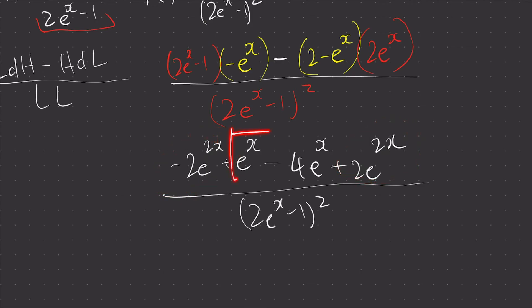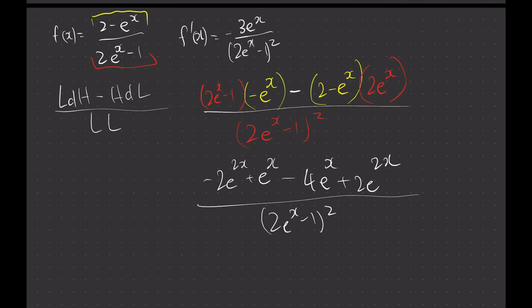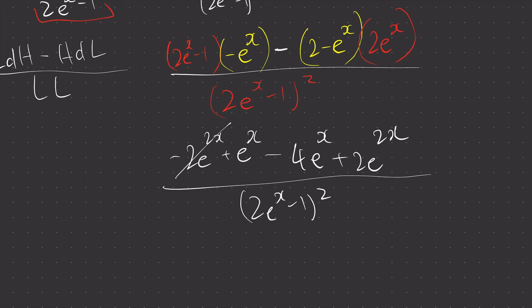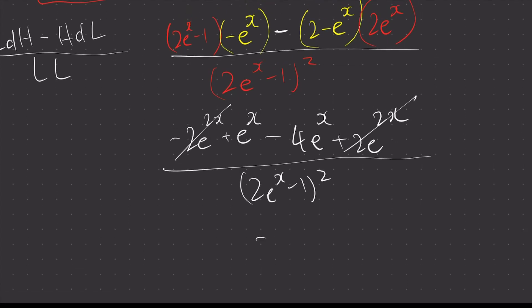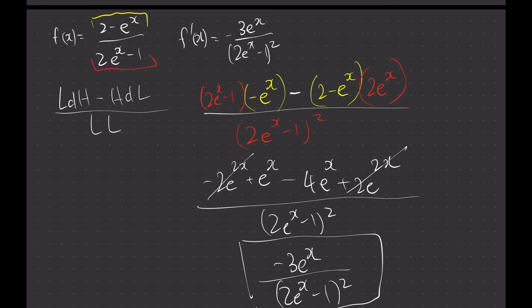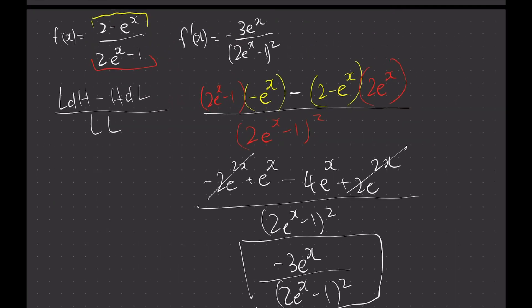So at the top, what are we left with? After cancellation, e to the power of x minus 4e to the power of x becomes negative 3e to the power of x, over (2e to the power of x minus 1) squared — which matches the target.